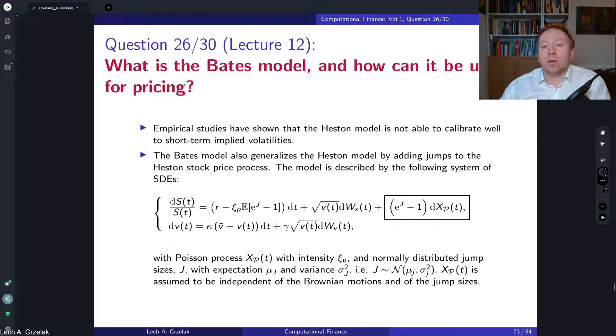The Bates model is an extension of the stochastic volatility model of Heston, which actually is given here. So if we forget about this term involving the volatility and also the one which is boxed here, then we have just the Heston model and then we have two elements.